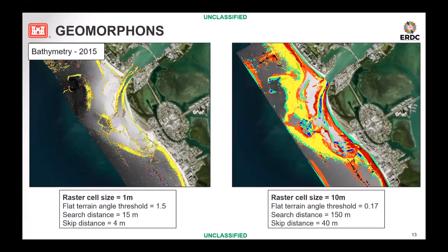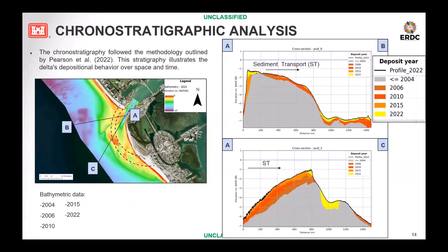This slide shows the difference of applying this tool to rasters of different resolution — one with higher resolution and one with lower resolution. The one with higher resolution is kind of noisy compared to the one with lower resolution; the 10-meter cell size raster is noisier. So what this suggests is that using a lower resolution raster would be best to get the approximate area of the ebb-tidal delta. Now talking about chronostratigraphy analysis, which follows the methodology outlined in Pearson 2022.